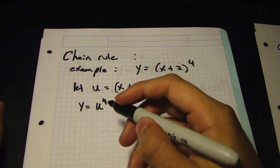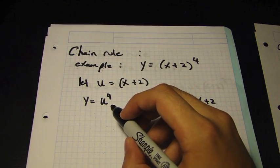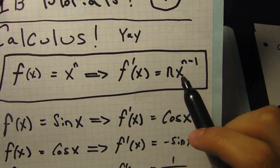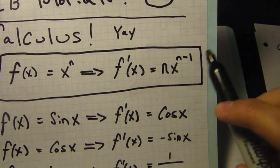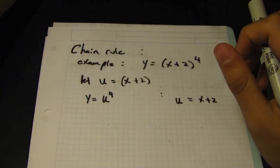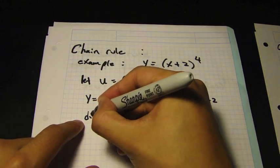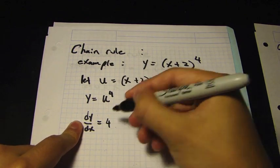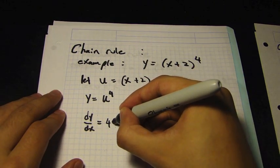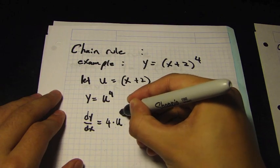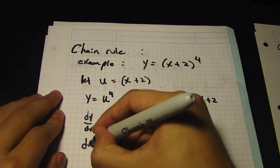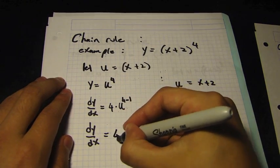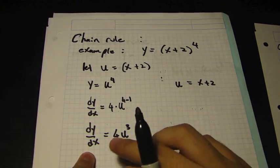Let's start with dy/du first. For this one we use the power rule: x to the power of n is n times x to the power of n minus 1. So dy/du equals 4 times u to the power of 4 minus 1, which gives us dy/du equals 4u to the power of 3.